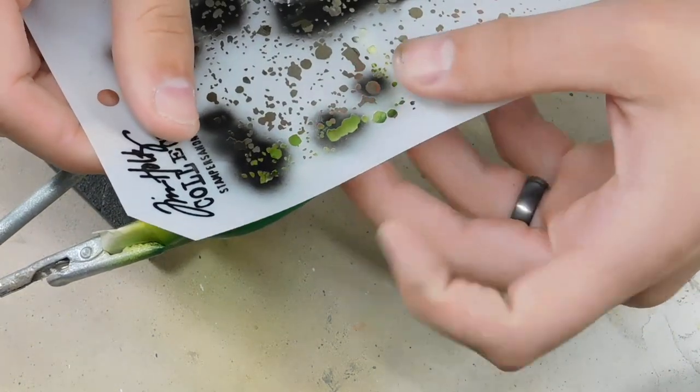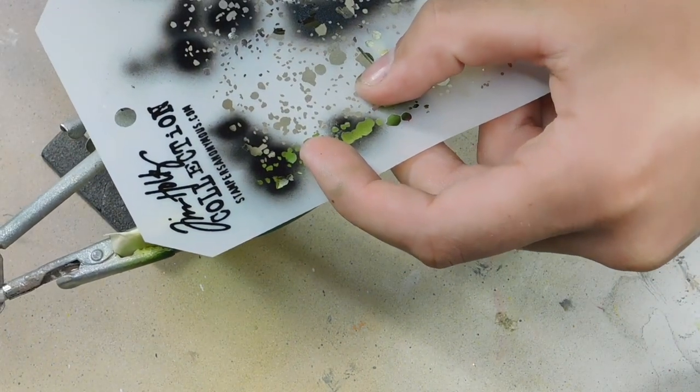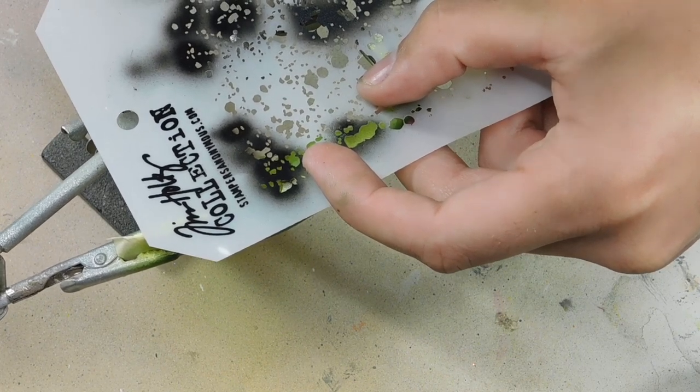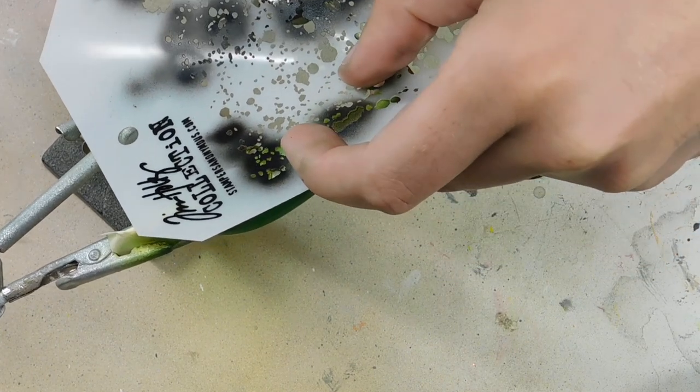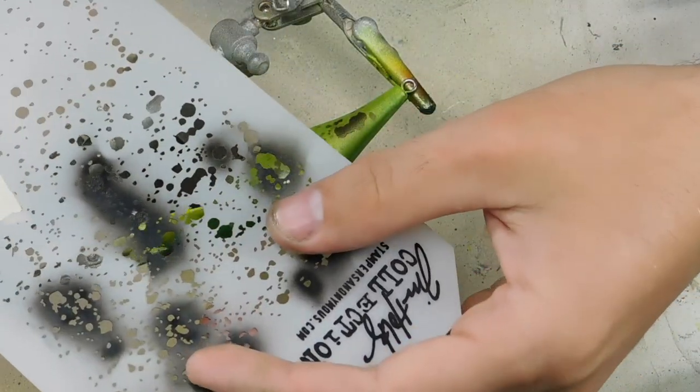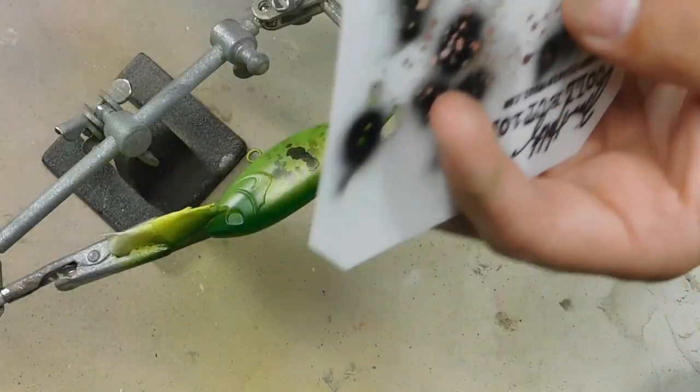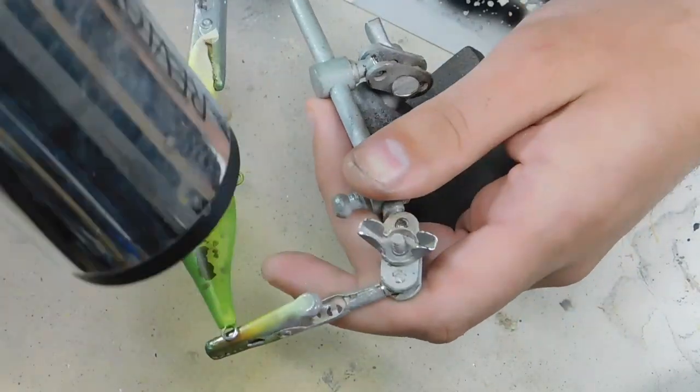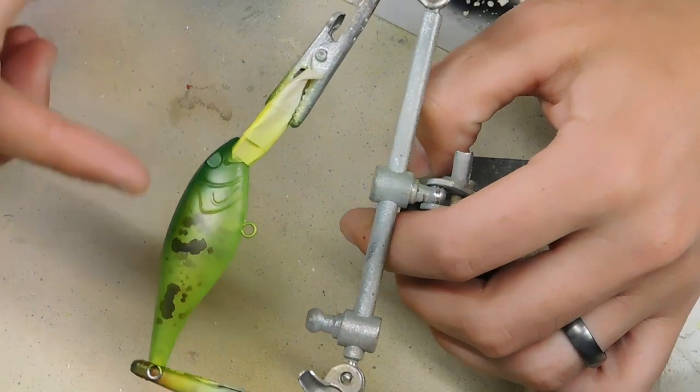There's a little bit showing up through. Another thing that might be really fun to experiment with this pattern is doing just like a white base on a lure and then spraying all different colors, so it'd be like a whole mess of colors with this pattern.